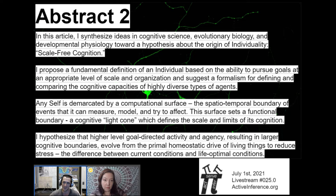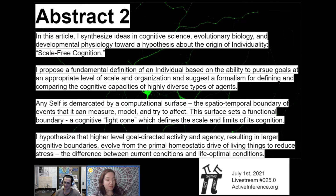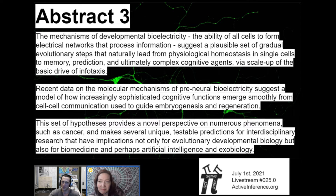I hypothesize that higher-level goal-directed activity and agency resulting in larger cognitive boundaries evolves from the primal homeostatic drive of living things to reduce stress — the difference between current conditions and life-optimal conditions. This goal-directed aspect implies that biological cognition has to be biological, but I wonder about what the goal of molecules in their organization is. Is that a goal-directed activity, like protons and neutrons and electrons wanting to reduce their uncertainty about where they are in space? How does it work at a non-biological level?